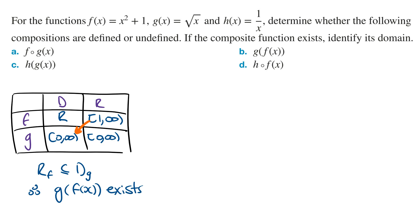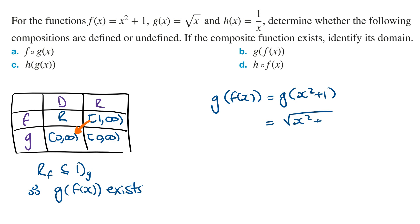The question doesn't ask to find the rule of the composite functions, but for the purpose of this video we will find them. g of f of x can be written as g of x squared plus 1. Wherever there is an x in the function g of x, we replace it with x squared plus 1, giving the square root of x squared plus 1. The domain of this composite function is the domain of the inner function f, which is all real numbers.